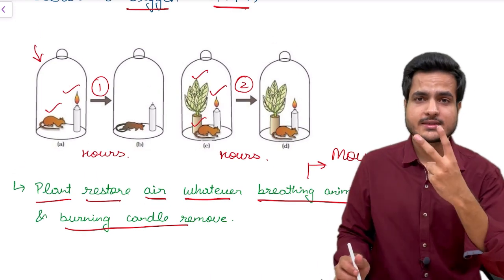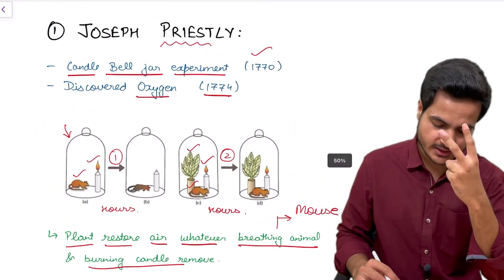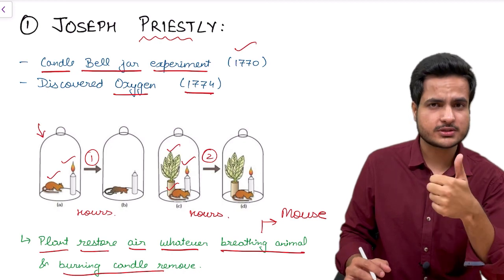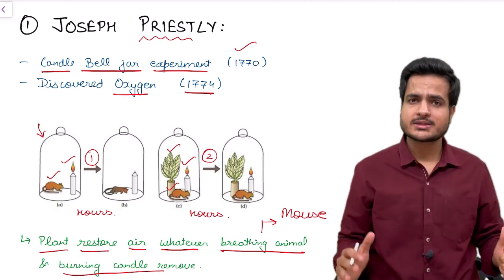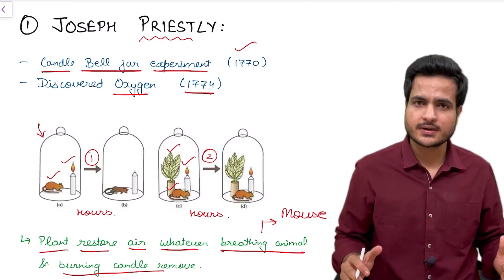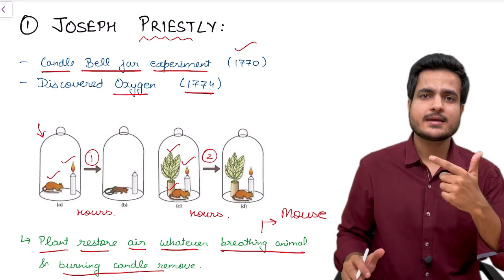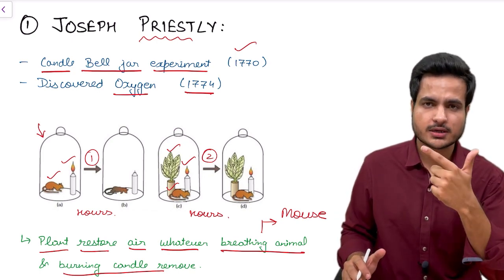So let's study the two statements given by Joseph Priestley. First, he did the candle bell jar experiment in 1770 and in 1774 he discovered oxygen gas.